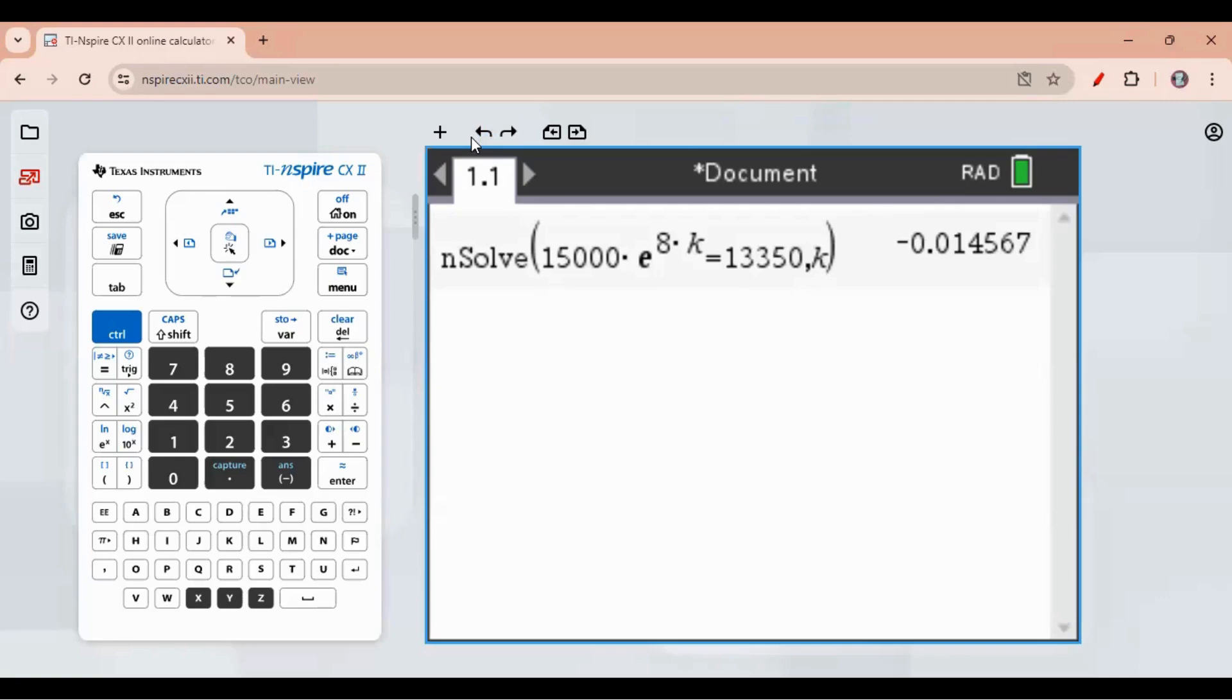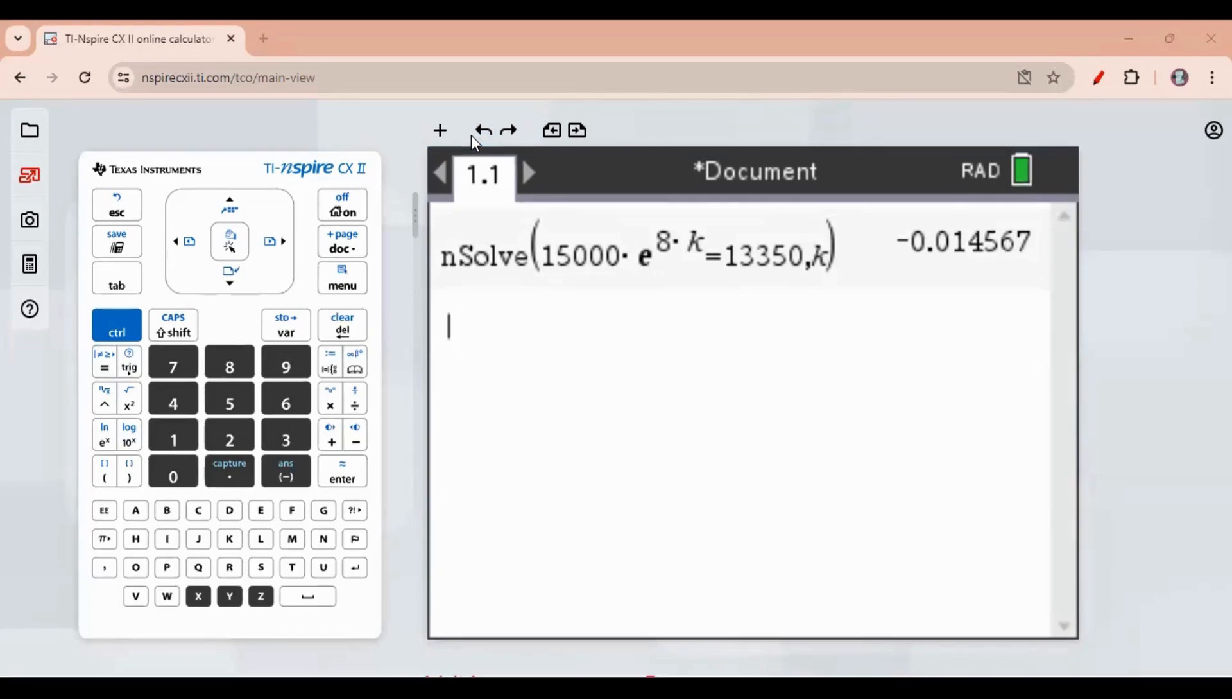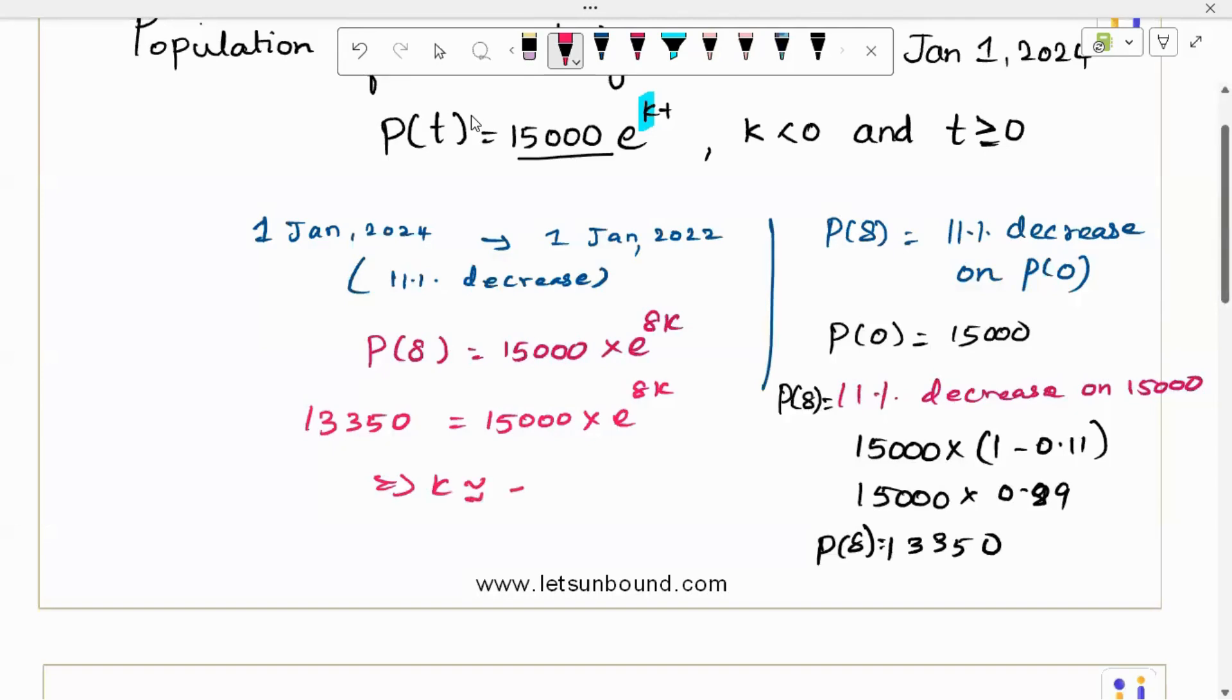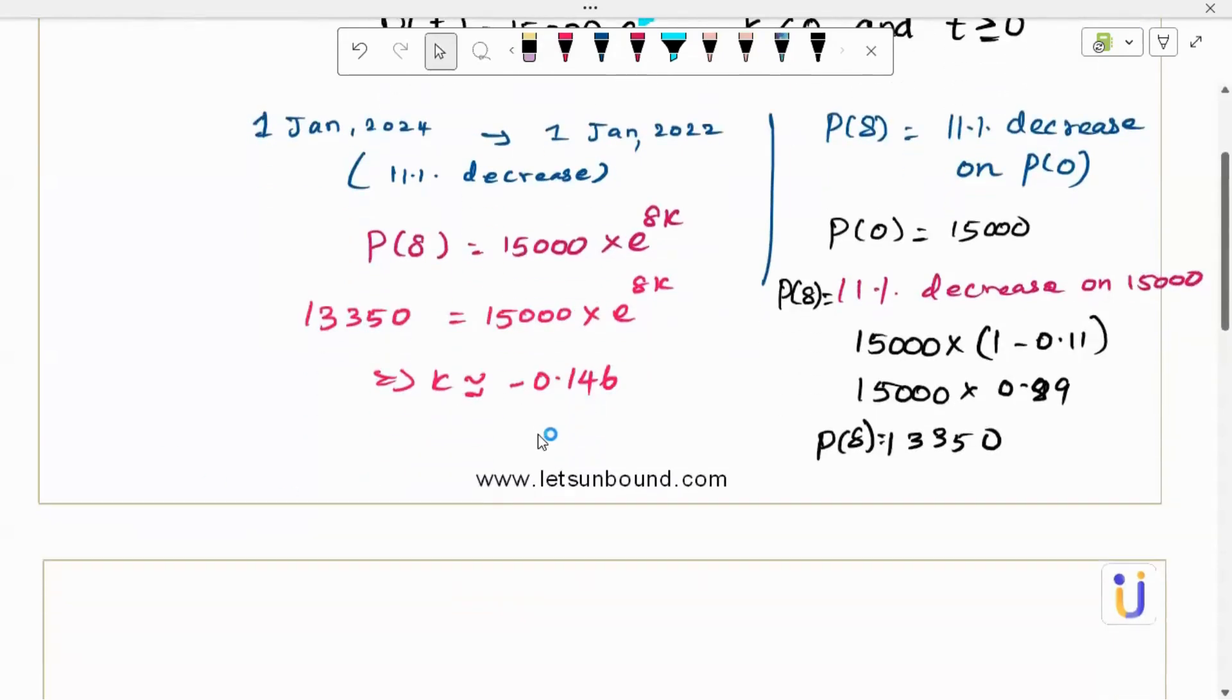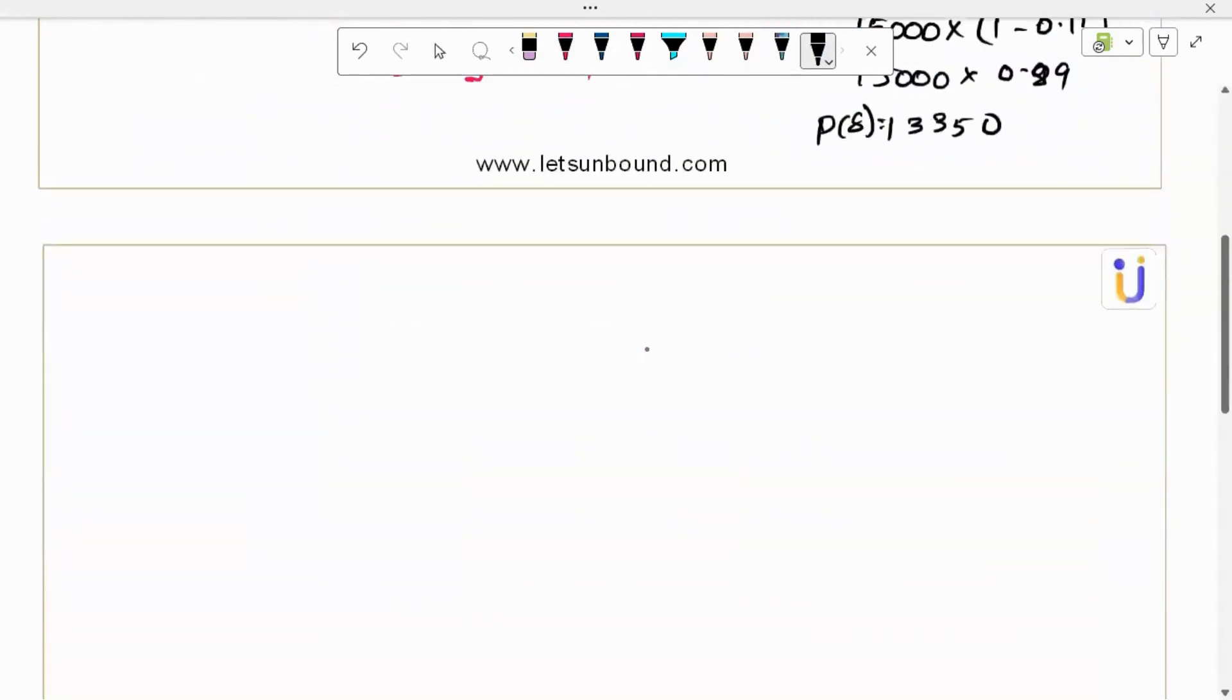This implies k is approximately negative 0.0146. So let me take 0.0146. And then after this, we got k. Now the model is getting completed. So the completed model is P of t is 15,000 e power negative 0.0146 t.